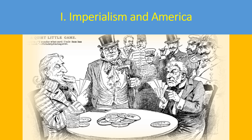Chapter 18 looks at imperialism and America. Americans had always sought to expand the size of their nation, and throughout the 19th century, they extended their control toward the Pacific Ocean. That was called Manifest Destiny.